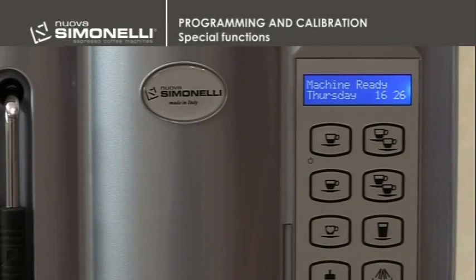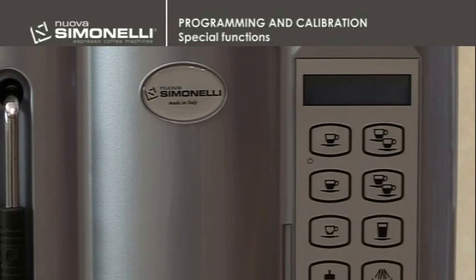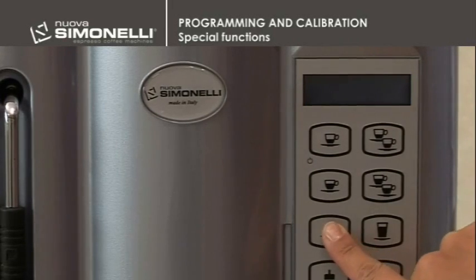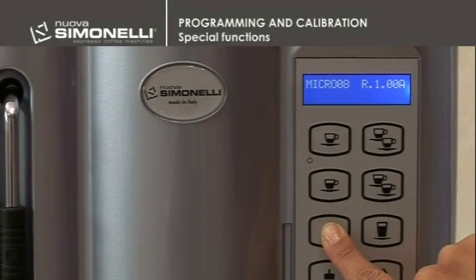Washing Cycle Zeroing: this enables resetting the number of washing cycles performed to zero. It is necessary to switch the machine off using the main switch placed behind it, push the decaffeinated switch, and then switch the machine on pushing the key.